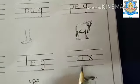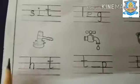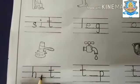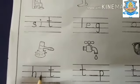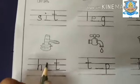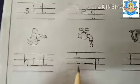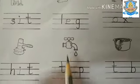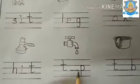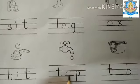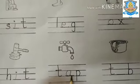O, X — ox. Next is heat: H, I, T — heat. So here we have to fill it in. Next is tap: T, A, P. So what do we write here? A.